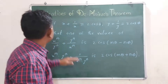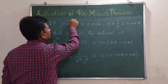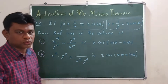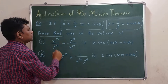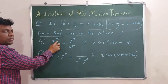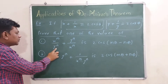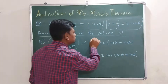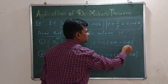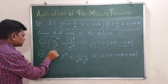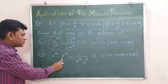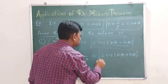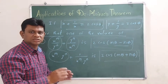Let us see Example 1. If x plus 1 upon x is equal to 2 cos theta and y plus 1 upon y is equal to 2 cos phi, then prove that: (1) one of the values of x to the power m upon y to the power n plus y to the power n upon x to the power m is equal to 2 cos(m theta minus n phi); and (2) x to the power m times y to the power n plus 1 upon x to the power m times y to the power n is 2 cos(m theta plus n phi).